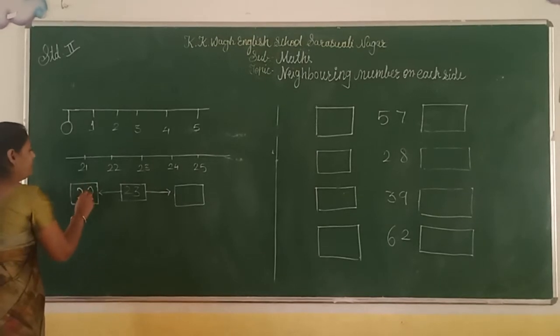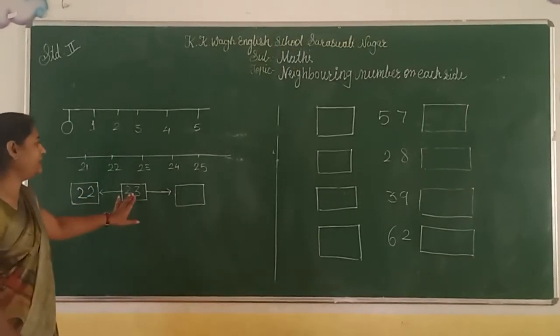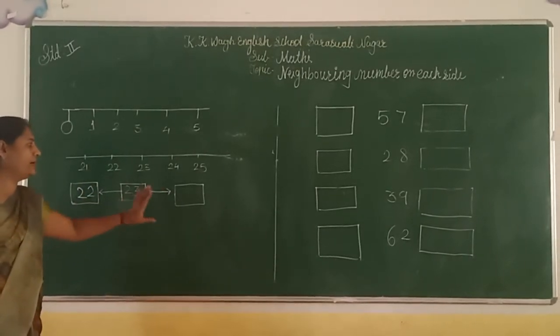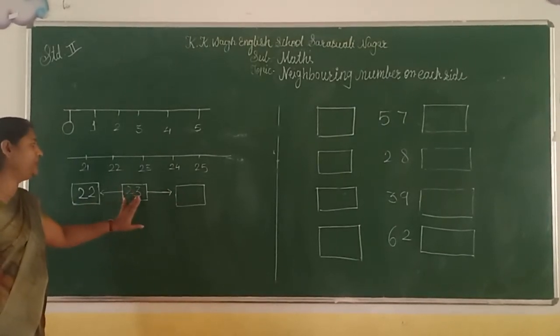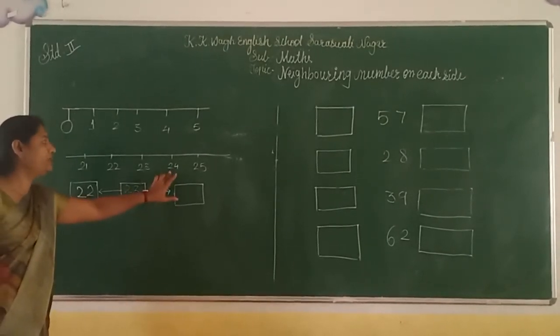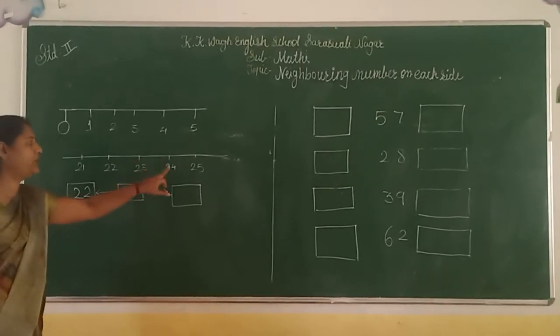And we want to find out the next number. Means after 23, there is a number 24. Observe, 23, after 24.